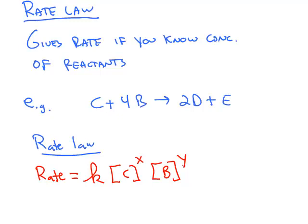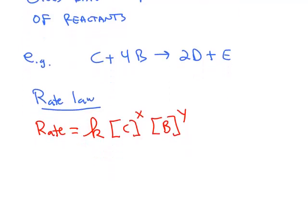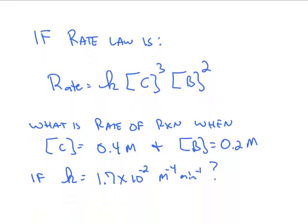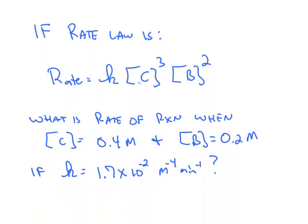Later on, you're going to see how we calculate x and y from experimental data, but for now, let's say that I give you the rate law is this rate law: k times C to the third times B to the second.